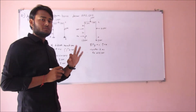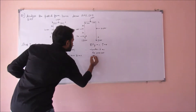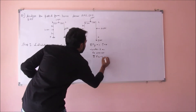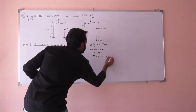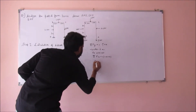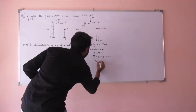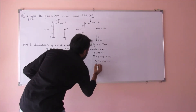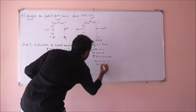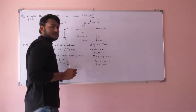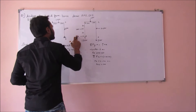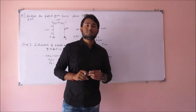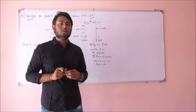For this, we need to apply the third condition of equilibrium, which is summation Fx equal to zero. Rightward force is positive. Therefore, Ha plus 10 minus 20 equals zero. Therefore, Ha is equal to plus 10 kN. So our assumption was right. We can replace Ha by plus 10 kN. Now our first step is completed — we have calculated all the support reactions.